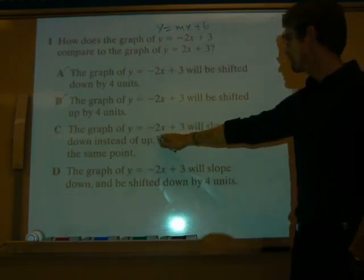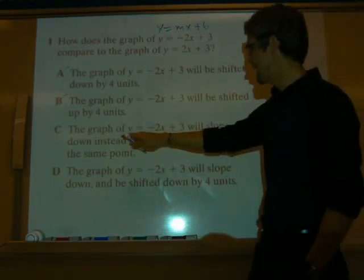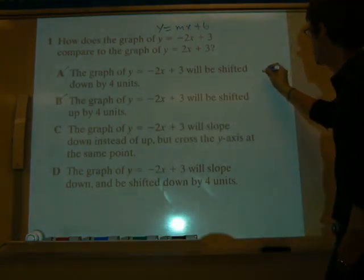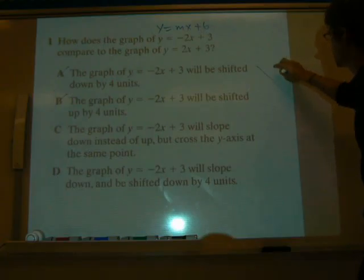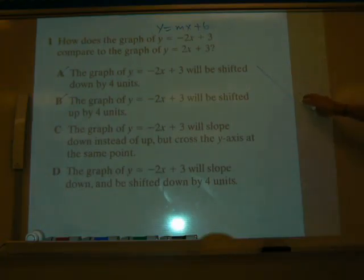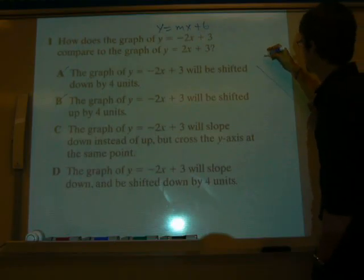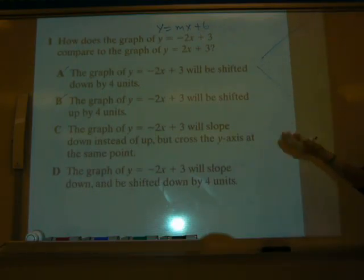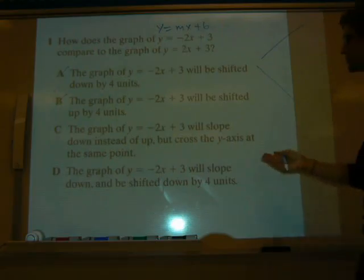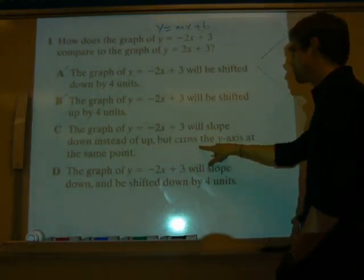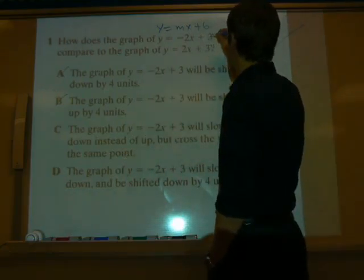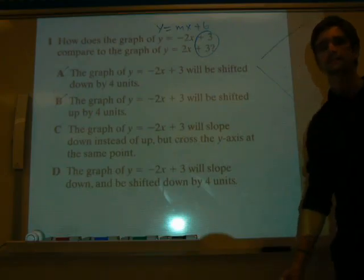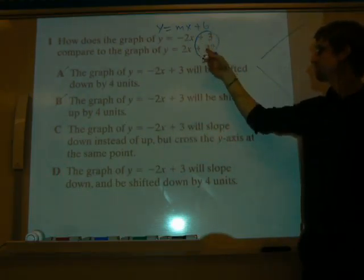Let's look at here. The graph, negative 2x plus 3, will slope down instead of up. That's right. Because remember, a negative slope is like this. It's like you're going down the hill. You're traveling down the hill. That's a negative slope. This is a positive slope. It's like you're traveling up the hill. You're walking up the hill. So therefore, this sounds good. We'll slope down instead of up, but cross the y-axis at the same point. Yeah, because look, our b is our y-intercept. They both cross at 3. Both cross at 3. So therefore, C sounds good.